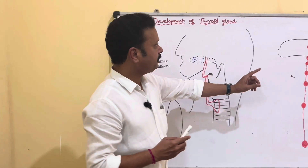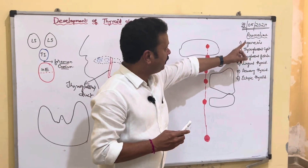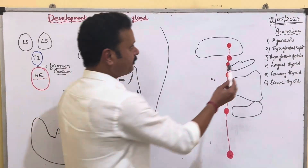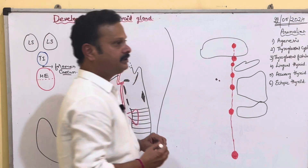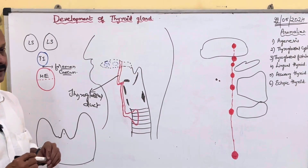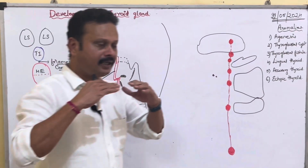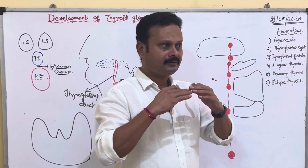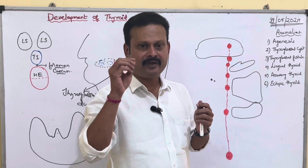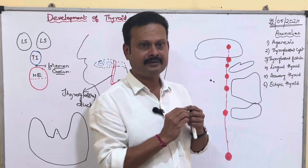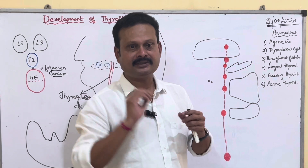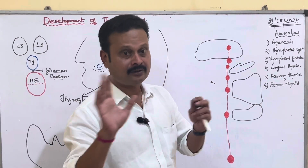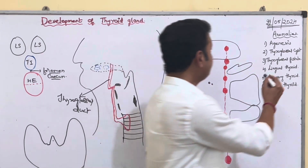Moving on to the anomalies of the thyroid gland: first is agenesis. Although it is rare, the thyroid gland may not form due to the presence of anti-thyroid antibodies circulating in the mother. These may pass through the placental barrier and reach the fetus, preventing the fetal thyroid from growing. That is agenesis of the thyroid gland.